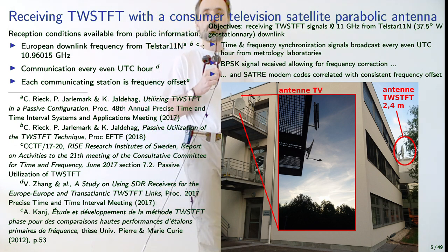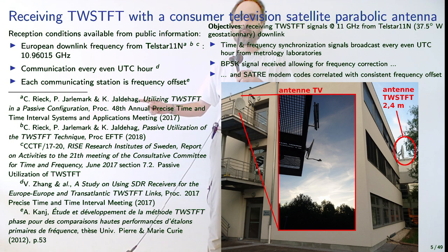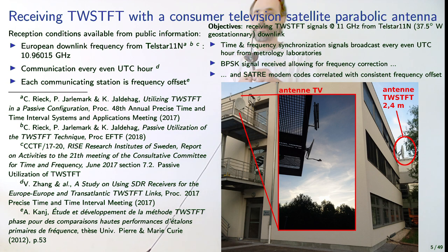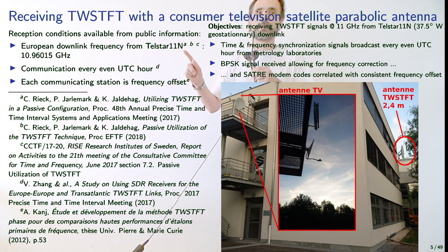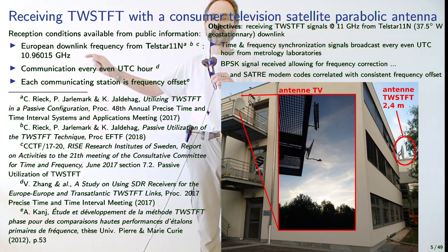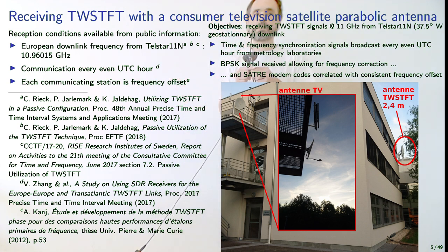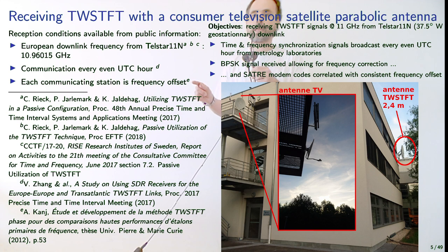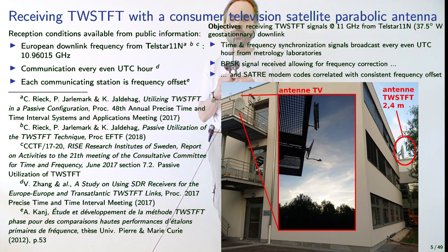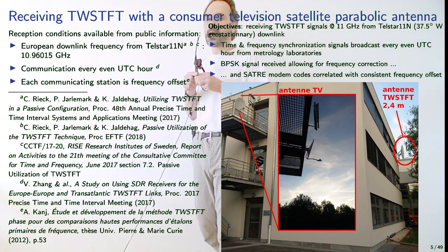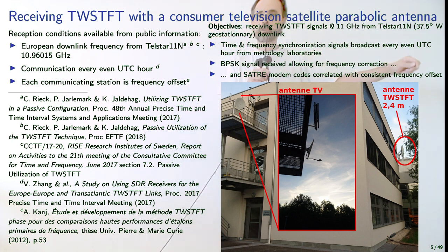All the information I'll share is found in the public literature. Scientific publications document that these laboratories share information as a binary phase shift keying signal with pseudorandom sequence modulation for time transfer using the geostationary satellite Telstar 11N at 10.9 GHz carrier frequency. The broadcast signal is emitted every even UTC hour, and each laboratory has a slight frequency offset as described in a French PhD thesis.